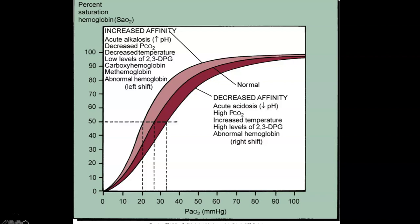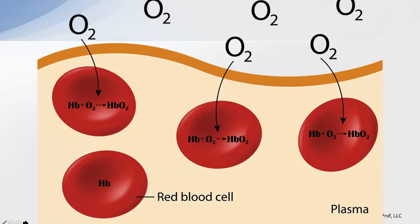To get as much oxygen to the tissues as possible and allow that oxygen to release and do its work, we need to have this oxyhemoglobin dissociation curve optimized in the middle. That means we need to optimize the patient's pH, CO2, and temperature. Once oxygen gets out into the cells — carried from the lungs down to the cells and tissues in red blood cells — we need to release it into the cells and tissues, using those processes we discussed with the oxyhemoglobin dissociation curve.